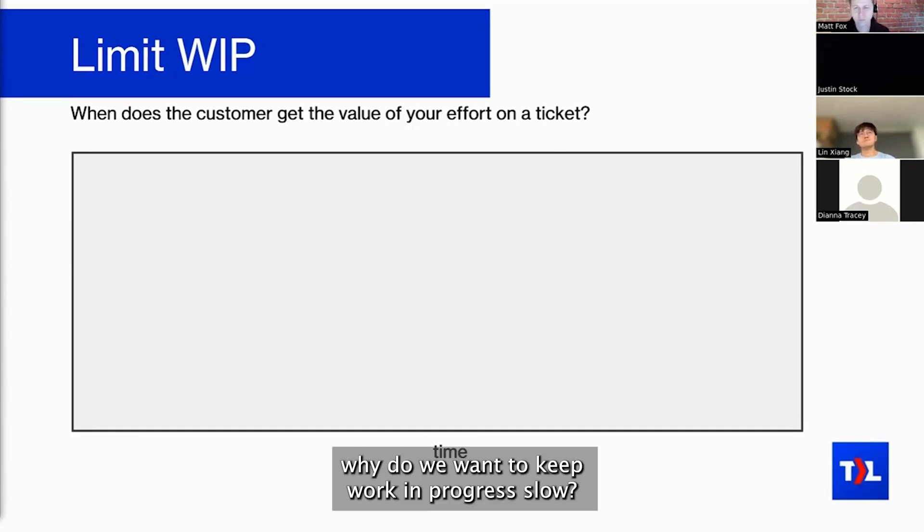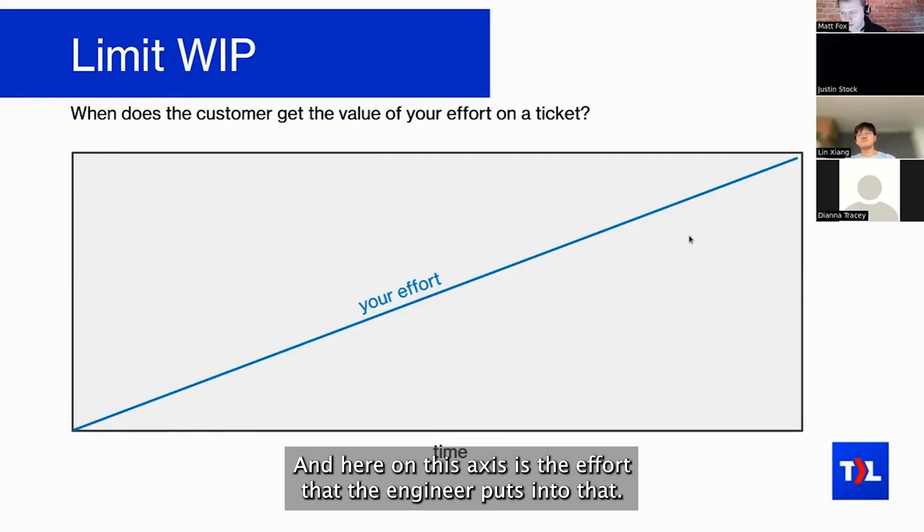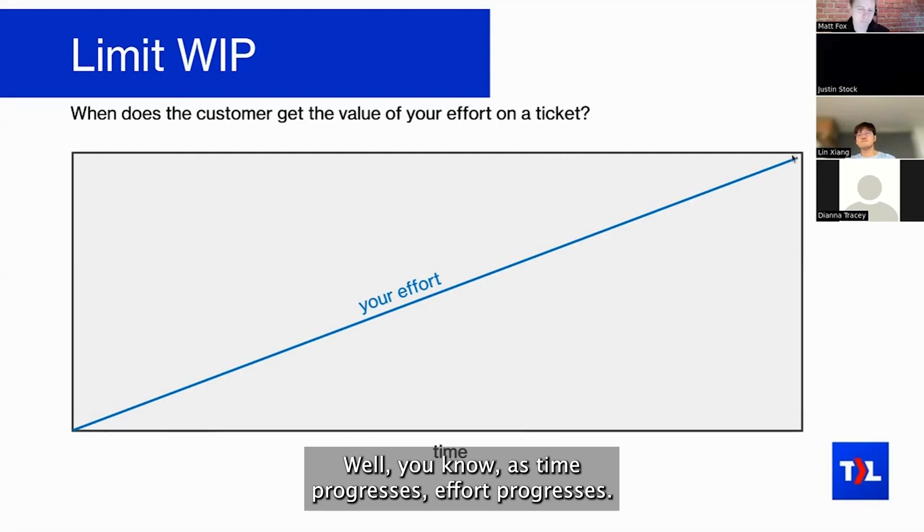Why do we want to keep work in progress low? Let's consider the effort that you put into a ticket over time as your engineers work on it. If you consider a single ticket here, time is progressing, and here on this axis is the effort that the engineer puts into that. As time progresses, effort progresses. The effort over time is pretty linear—that's from the experience of your team, from your engineers.